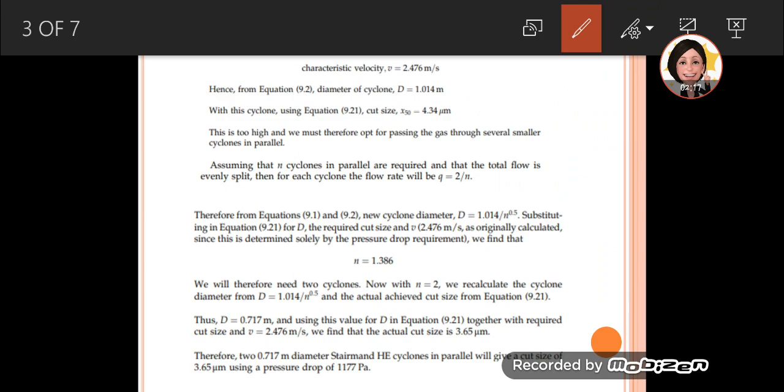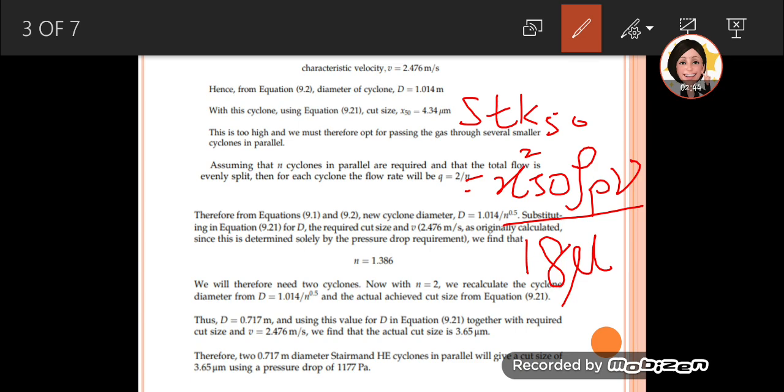Next, we use equation 9.21, the Stk50 equation. This Stk50 equals x50 squared times density of the particles times velocity over 18 mu (viscosity of the gas) times the diameter we just calculated. Using all these known values, including particle density...